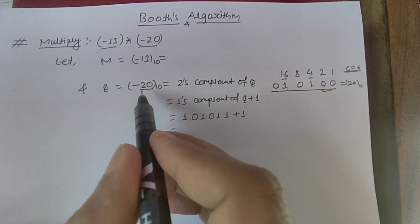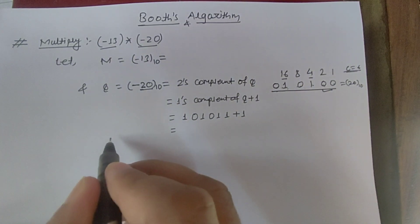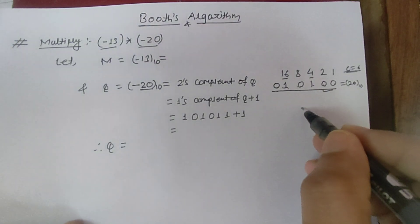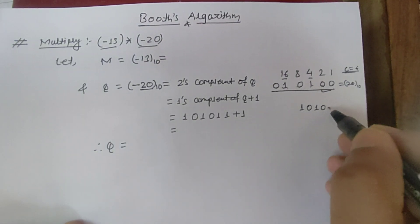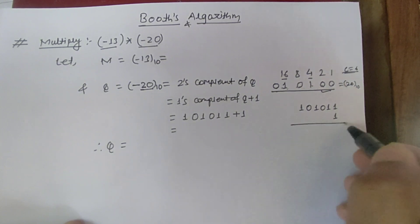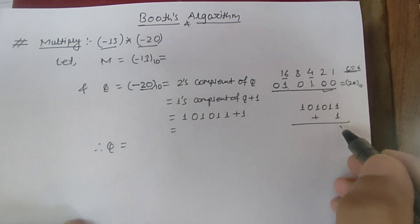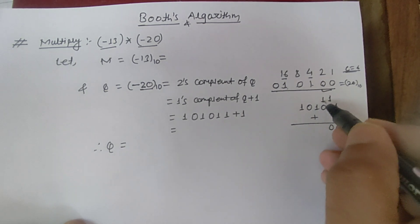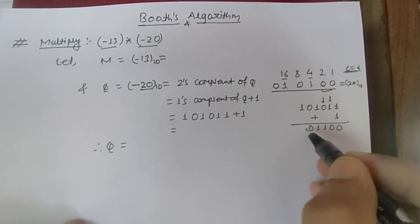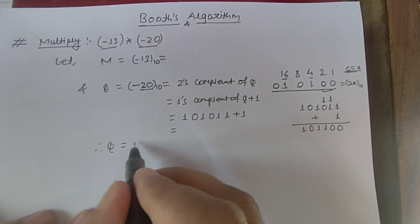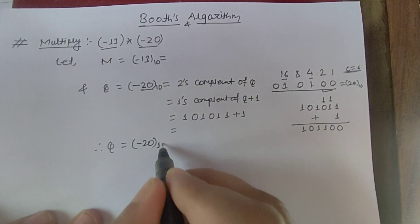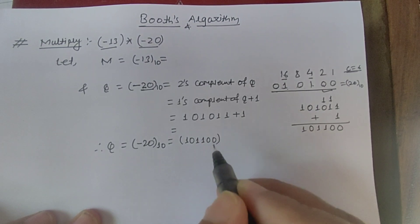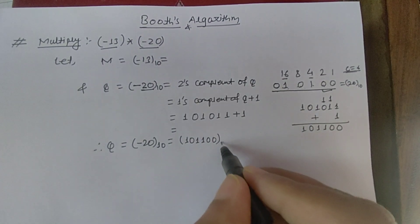Adding 1 to the 1's complement 101011: 1 plus 1 = 0 carry 1, then 1 plus 1 = 0 carry 1, and so on. The result is 101100. Therefore, minus 20 in binary is 101100.